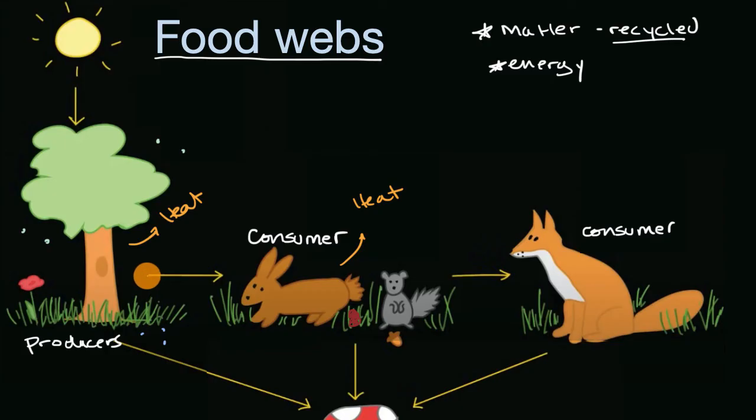And you can see in this food web, we draw an arrow from the thing that is being consumed, to the thing that is doing the consuming. So a rabbit consumes a plant. And so the arrow goes from the plant to the rabbit. A fox consumes a rabbit or a squirrel. So an arrow goes from the rabbit or the squirrel to the fox.